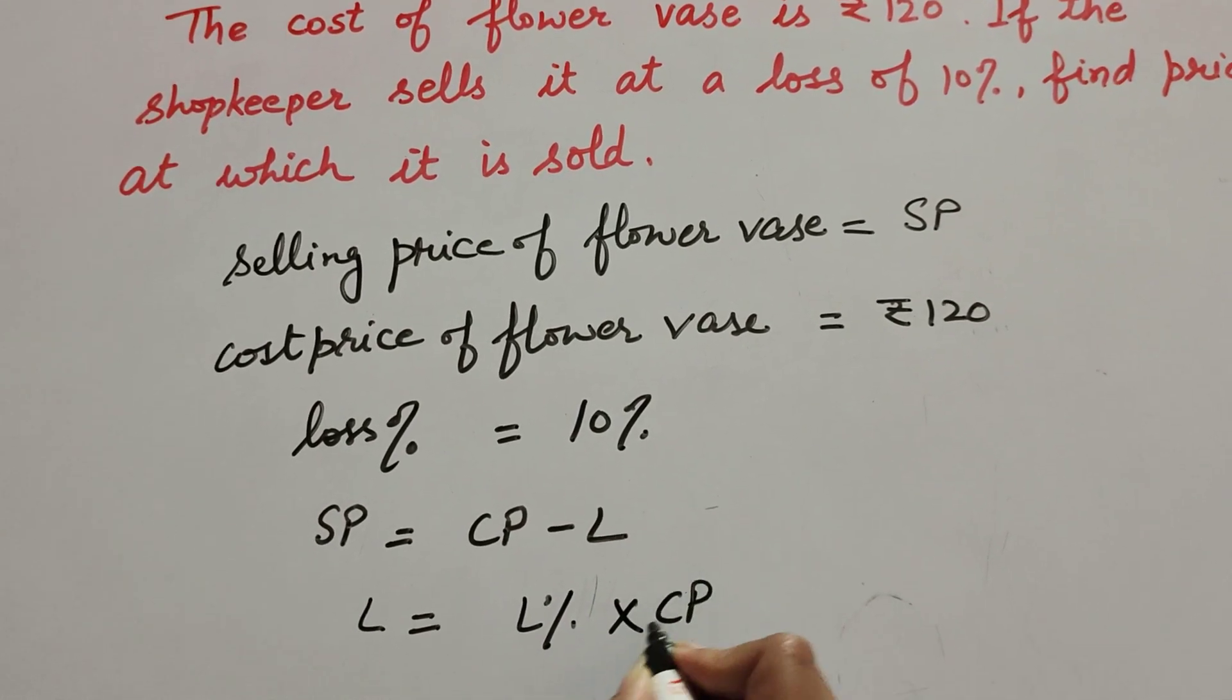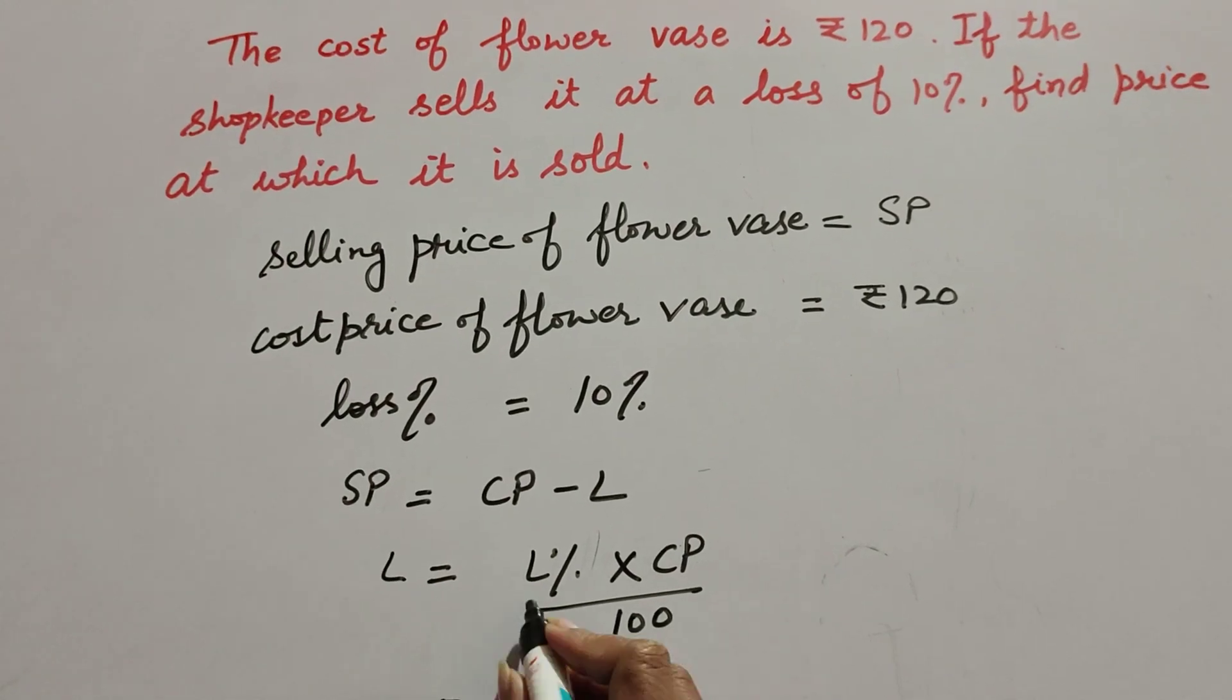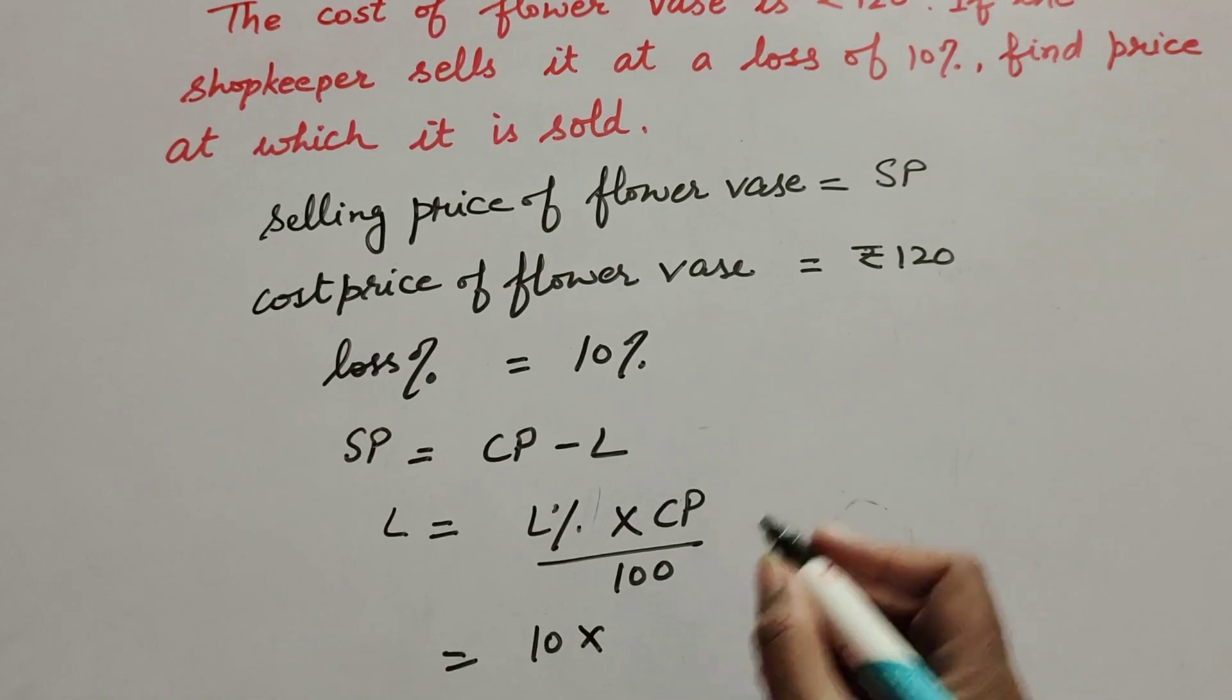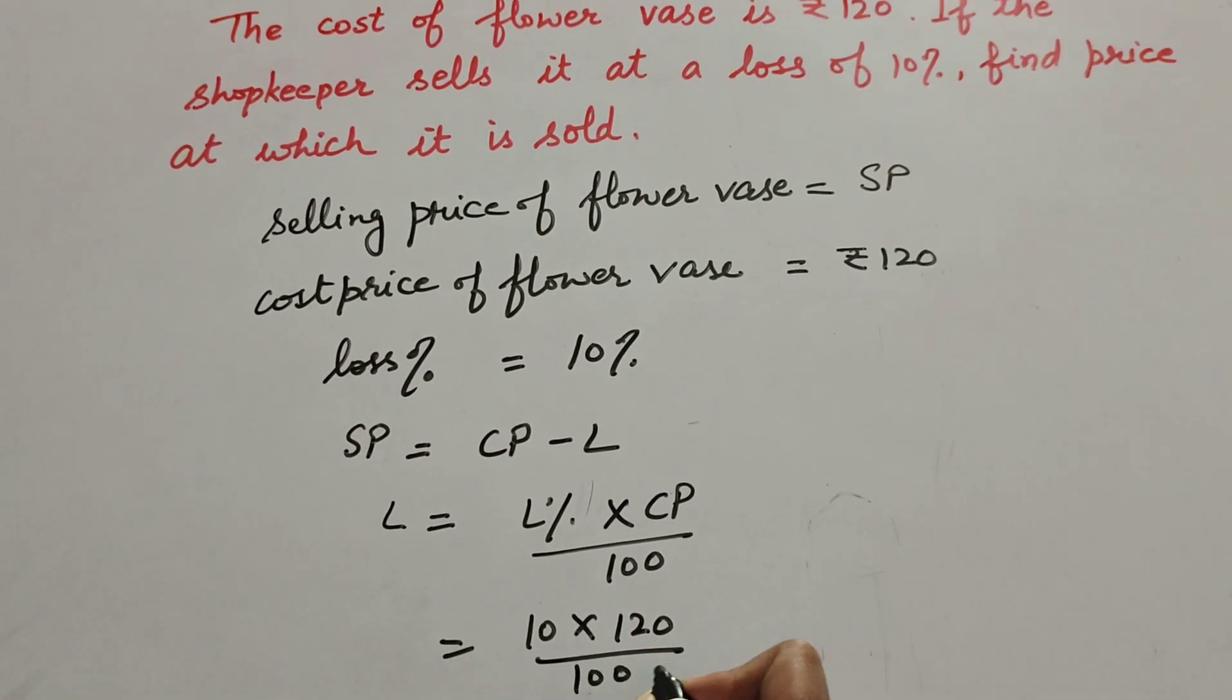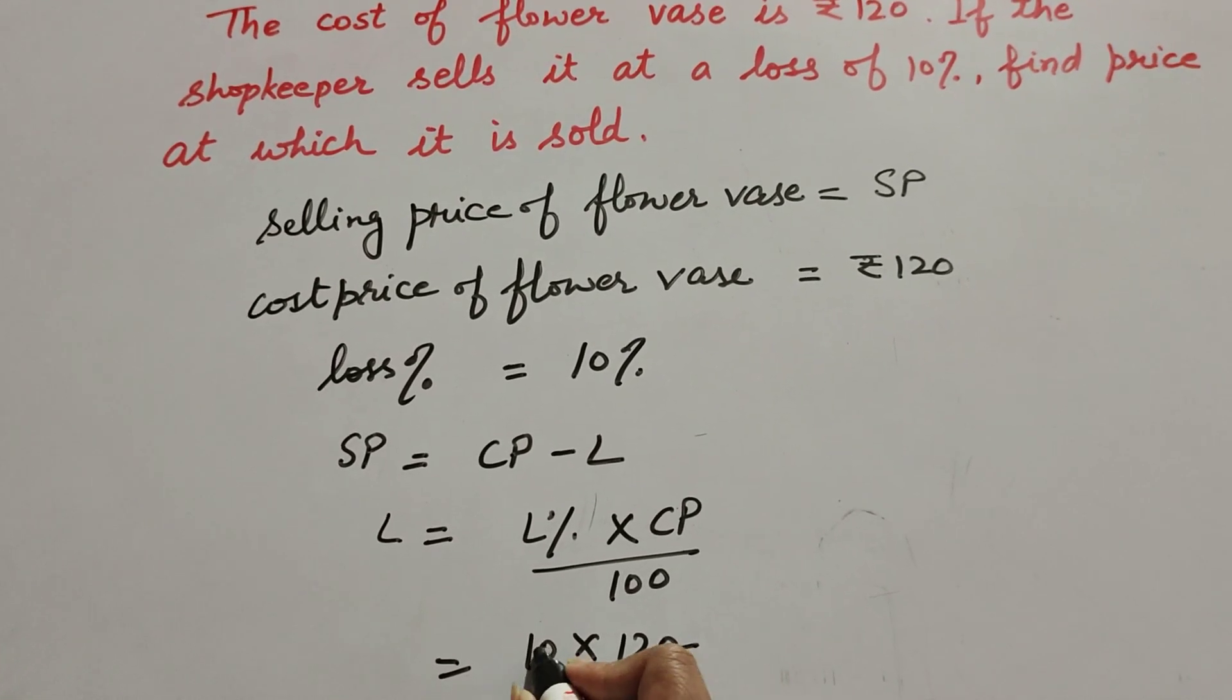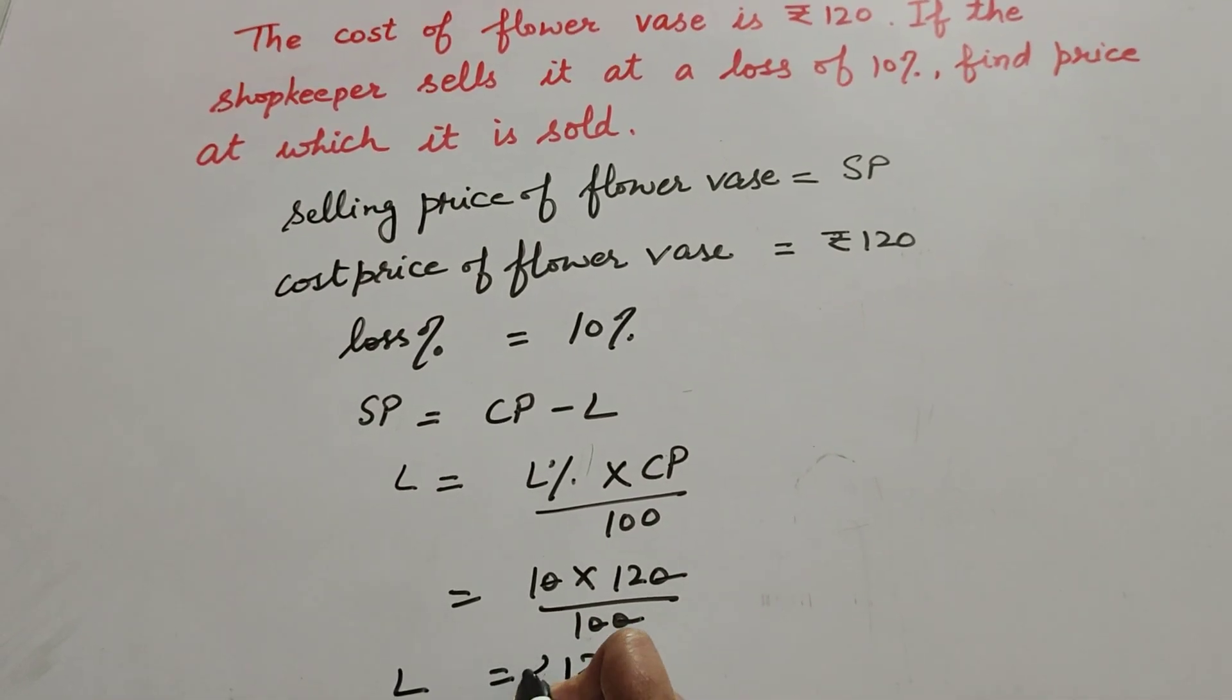So loss percent is equal to 10, multiply cost price which is 120, over 100. Now this zero in denominator and zero in numerator is cancelled. So loss is equal to rupees 12.